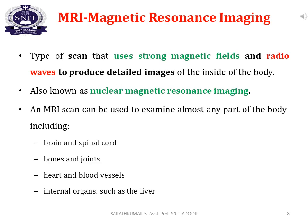The next scanning method is MRI — Magnetic Resonance Imaging. This is a type of scan that uses strong magnetic fields and radio waves to produce detailed images of the inside of the body. It is also known as Nuclear Magnetic Resonance Imaging. MRI is used to image the brain, spinal cord, bones, joints, heart, blood vessels, and internal organs such as the liver and kidney.